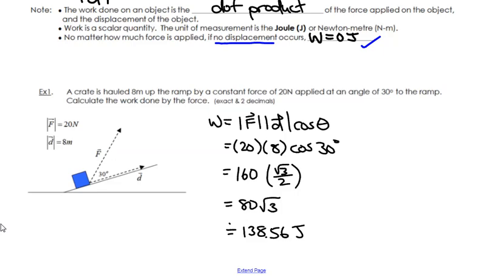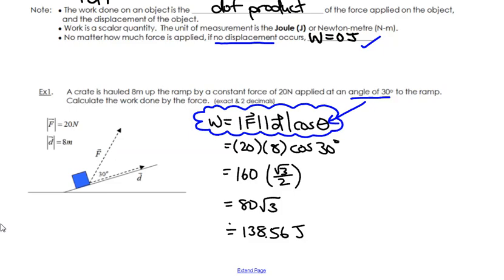Example 1: A crate is hauled 8 meters up a ramp by a constant force of 20 newtons applied at an angle of 30 degrees to the ramp. Calculate the work done by the force. Since we're given an angle, we use the work formula with theta — not the dot product version. The 30 degrees must be from tail to tail. You have 8 meters for displacement and 20 newtons for force. Multiplying that all together gives your joules. Don't forget your approximation — this is your exact answer, and this is your approximate answer.